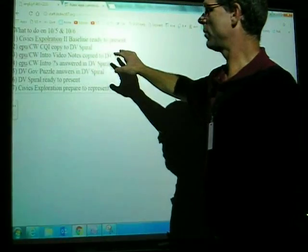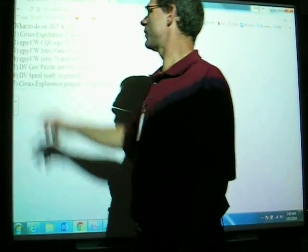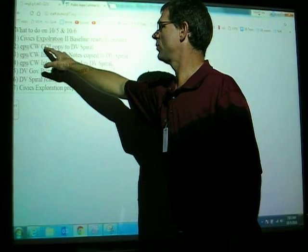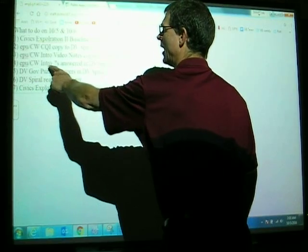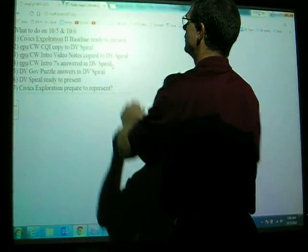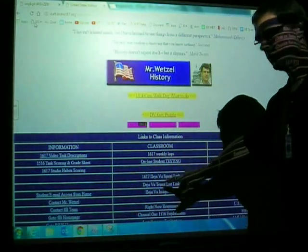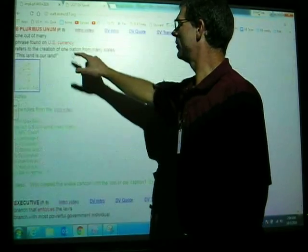The next thing we're going to do is start in on a couple of the history Deja Vu terms: e pluribus unum and the Civil War. So there's the process of copy the clues, quotes, and image, copy the intro video notes, and then get the intro questions answered in the Deja Vu spiral. I'm going to open up a new tab here, go to Deja Vu spiral, and I'm going to start with EPU, which is e pluribus unum.